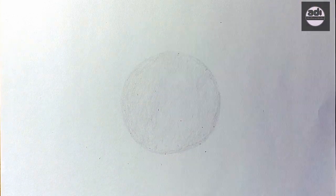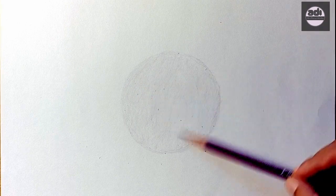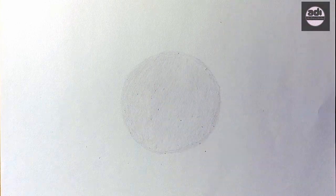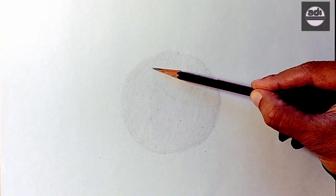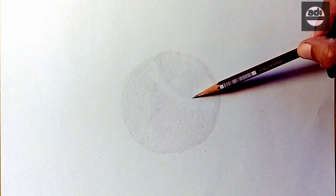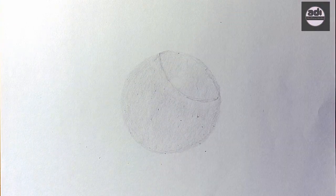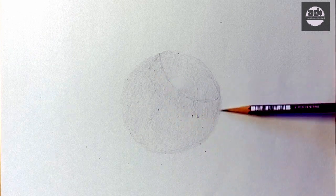You will then mark the center light area by putting a ring around it with a 2H pencil. Then you will put the light form light, mid-tones, and dark form light using the 2H and HB pencils respectively. The change in the tonal value is subtle.